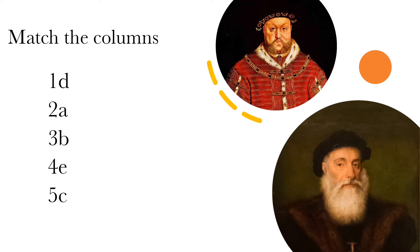Match the column. First, Bartoloma Diaz — Option D — sailed around Africa for the first time. Second, Martin Luther — ninety-five theses. Third, Henry VIII — Option B — established the Church of England. Fourth, Vasco da Gama — E — discovered a new sea route to India. Fifth, Michelangelo — Option C — Renaissance painter.